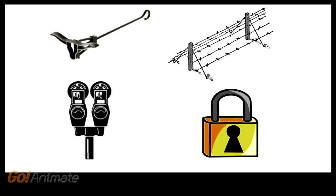The top left is a branding iron, the top right is a barbed wire fence, the bottom left is a parking meter, etc.